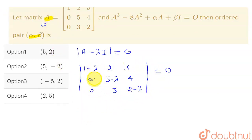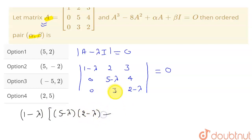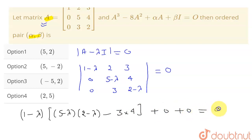There are two zeros in the first column, so I'll expand the determinant along the first column. This gives (1−λ) times [(5−λ)(2−λ) minus 3×4], and the other terms are zero.